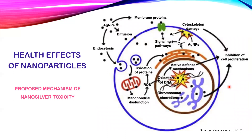Next is nano silver. Nano silver can also penetrate the cells and cause numerous effects depending on the type of cell it invades. It can disrupt the mitochondria, causing it to dysfunction. It can induce the formation of ROS — reactive oxygen species — which leads to oxidative stress and inflammation. It can even affect the DNA by causing chromosomal aberrations, and thereby inhibit the growth of the cells.